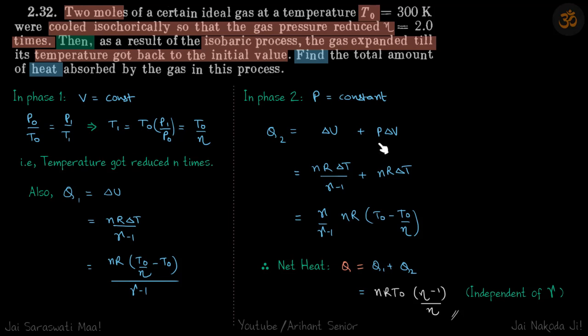We know delta T, so we'll write both of them in terms of delta T. So delta U will become n R delta T by gamma minus one, and P delta V is n R delta T. From here, we'll find final temperature is same as initial temperature, that is T0.